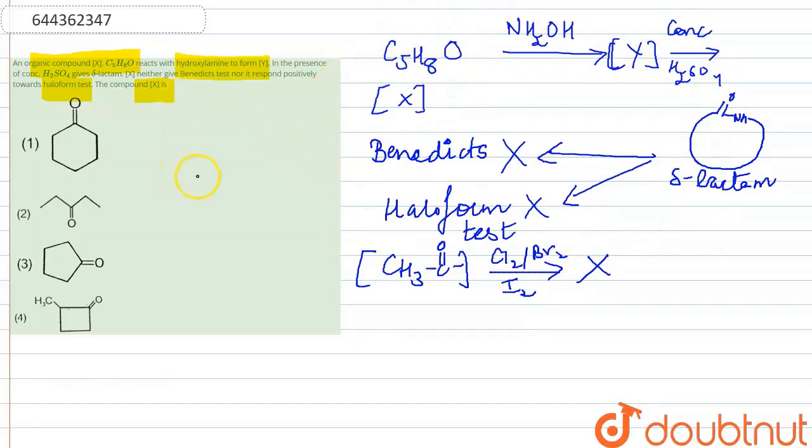This is the basic flow chart given to us via this question and we'll proceed in the similar manner. Out of the following options, this cannot be compound 2. Why? Because if you look carefully, this compound has a ketone but if we mark the positions we have only alpha and beta position. Whereas this compound forms a delta lactam.